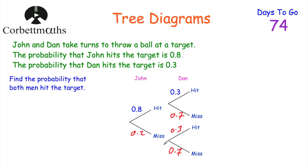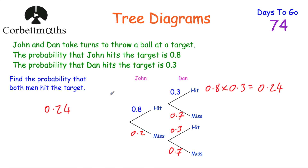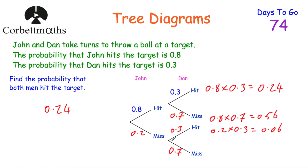Now let's look at our first question: find the probability that both men hit the target — that's hit and hit. To find that, we multiply the probabilities along the branches: 0.8 multiplied by 0.3 equals 0.24. So the probability that both men hit the target is 0.24. Let me fill out all the outcomes: hit-hit is 0.8 × 0.3 = 0.24; hit-miss is 0.8 × 0.7 = 0.56; miss-hit is 0.2 × 0.3 = 0.06.